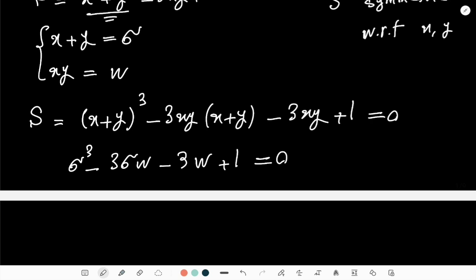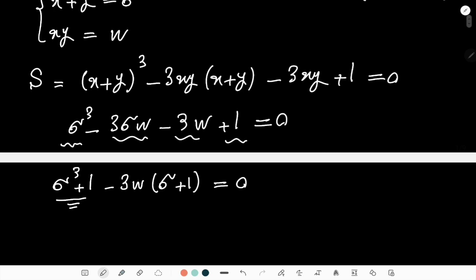If you look at these two guys and also these two guys here, you see that if I just reorder the terms I get σ³ + 1 - 3w(σ + 1) = 0, and there is also a factor here σ + 1 in the first terms and I'm just going to take that out.